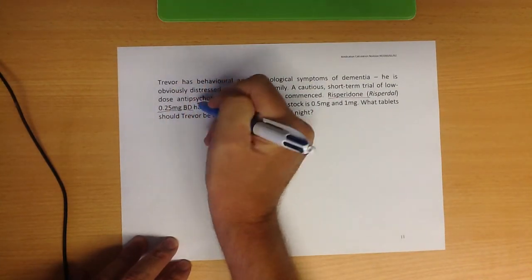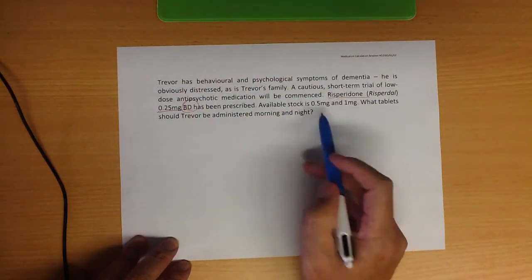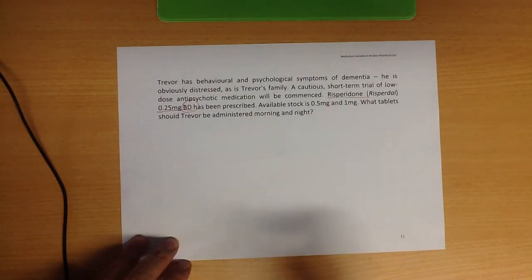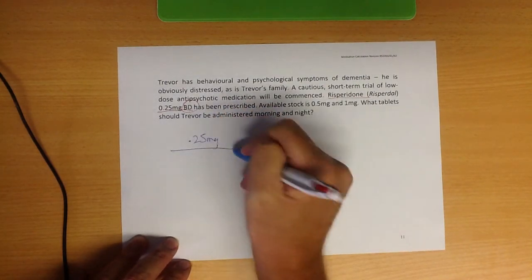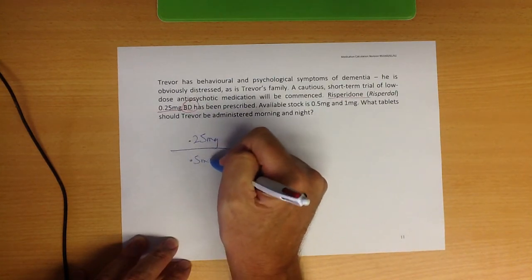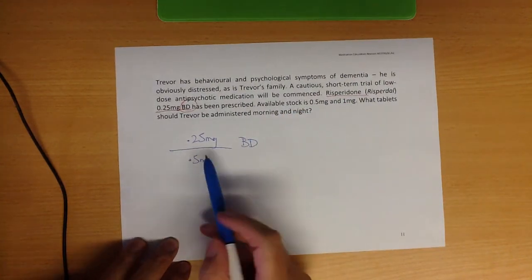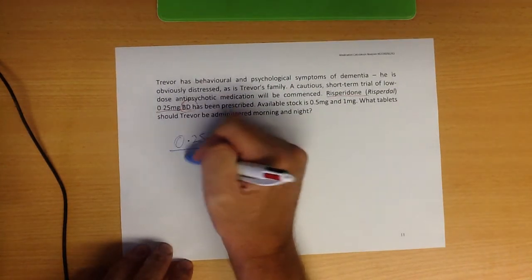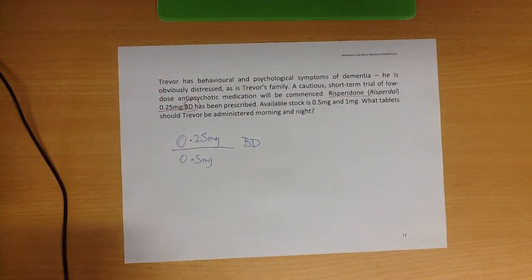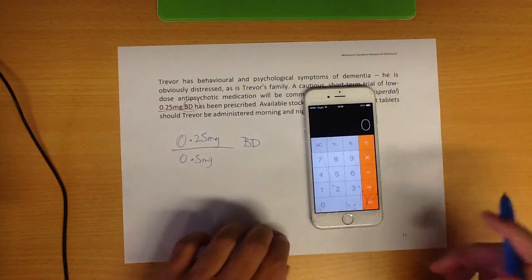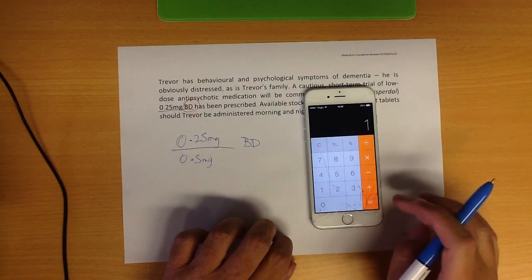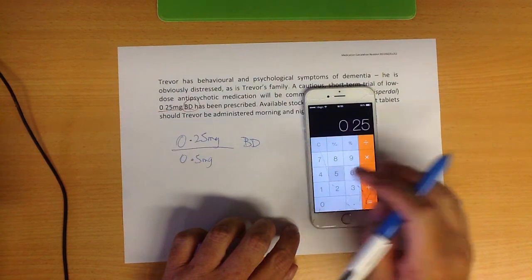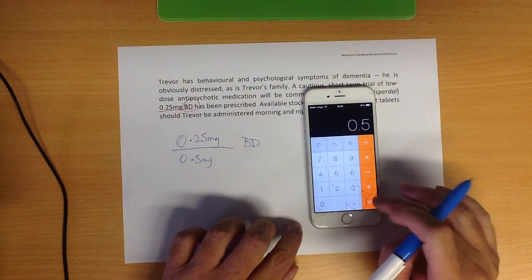Risperidone 0.25 milligrams BD has been prescribed. Available stock is 0.5 and 1 milligram tablets. So what we want is 0.25 of a milligram, and the smallest tablet we've got is 0.5 of a milligram. If you're not confident with that maths, once you get into fractions and things it can become a little bit confusing. But we've got there what you want over what we've got. So let's just use our calculator for this and make it really simple. It's 0.25 divided by 0.5.